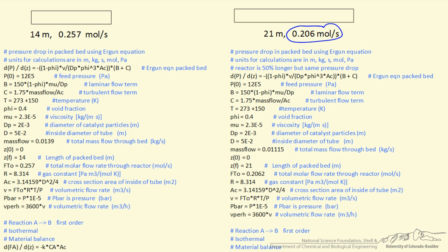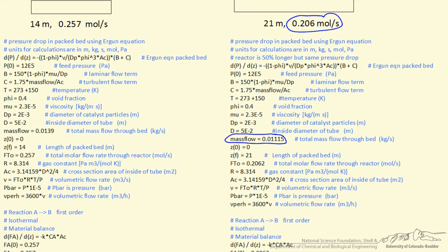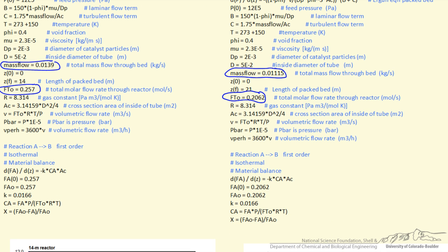Then we have to change also the mass flow rate, so the mass flow rate is proportional to the molar flow rate with molecular weight, of course, and notice this is kilograms per second, so the mass flow rate is decreased from the value in the shorter reactor, and then the total molar flow rate is decreased, and in this particular program, because of the way it's set up, that changed in a few places.